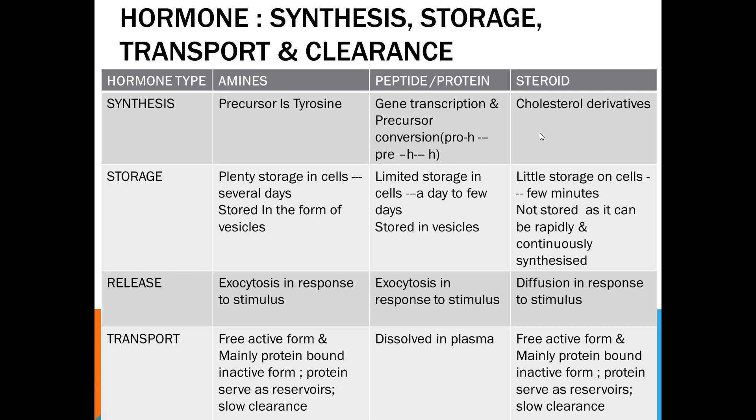Peptide protein secretion: synthesis is gene transcription and translation. These hormones are made as pre-pro-hormone, then converted to pro-hormone, then to hormone. Storage is limited—single day to few days in vesicles. Release is in response to a stimulus by exocytosis. Transport: since these proteins are soluble in plasma, they are distributed in dissolved form.